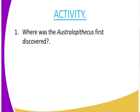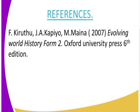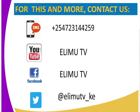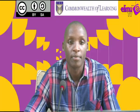For your assignment: where was Australopithecus first discovered, and who discovered it? You can research more using the textbook 'Evolving World History Form 2,' sixth edition by Oxford University Press. As always, watch our lessons via YouTube and Facebook, and follow us on Twitter at Elimu TV Kenya. This is Elimu TV — a station where we always watch and learn.